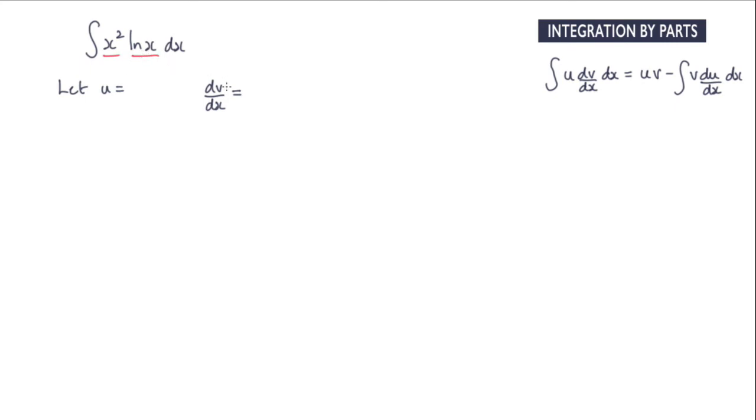The problem then is that we'd have to integrate log x and we don't want to be doing that. So the u term therefore is log x and the dv by dx term will be x squared.